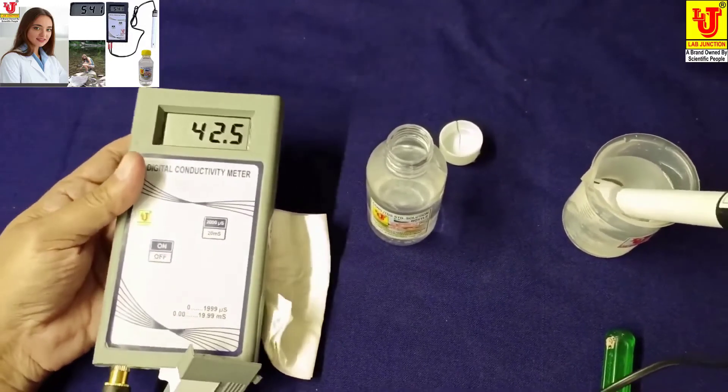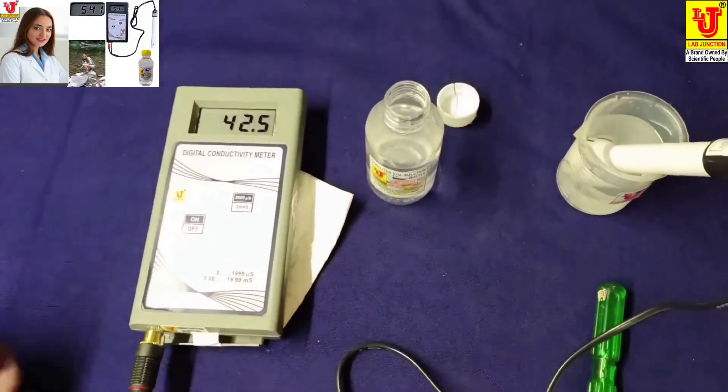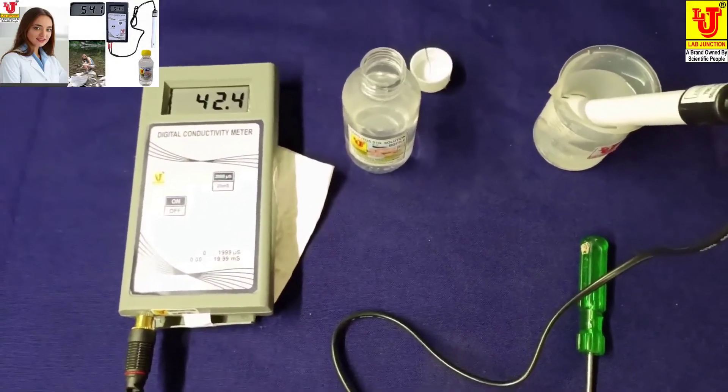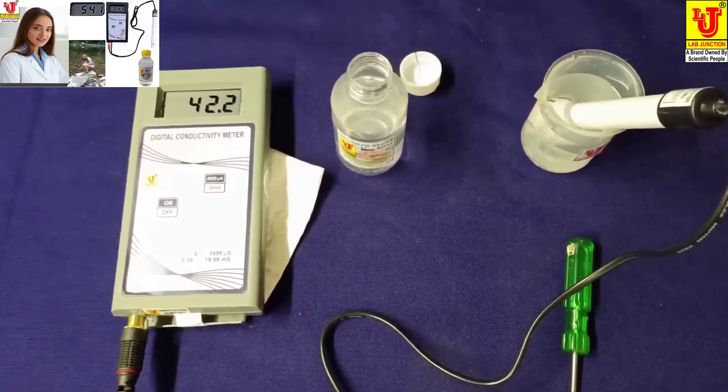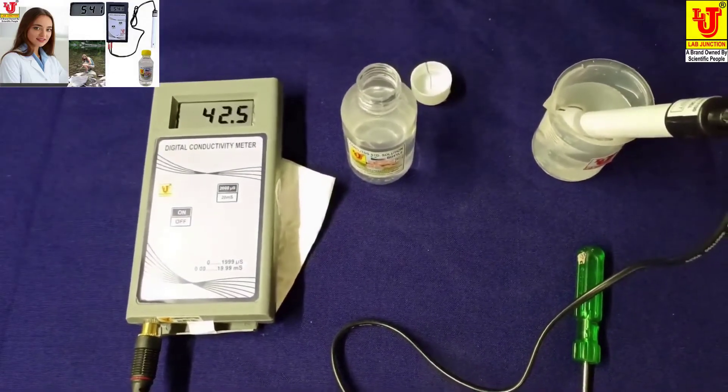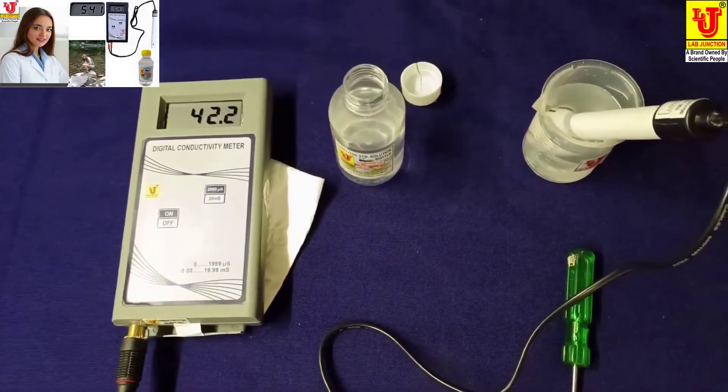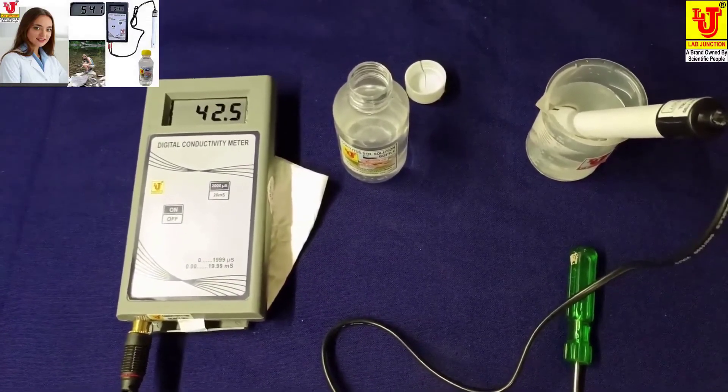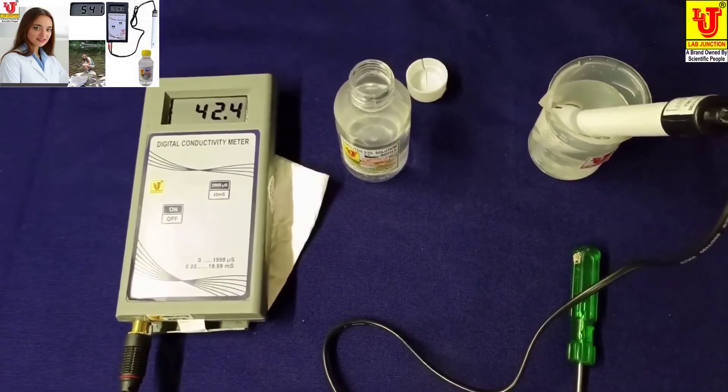Now this is the overall demonstration of this portable digital conductivity meter. If you don't use for a long time, please turn out 9 volt battery from the battery compartment for longer life of instrument and battery.